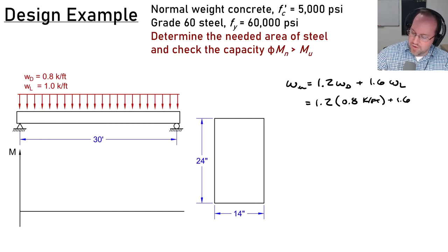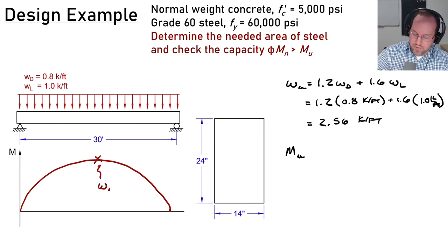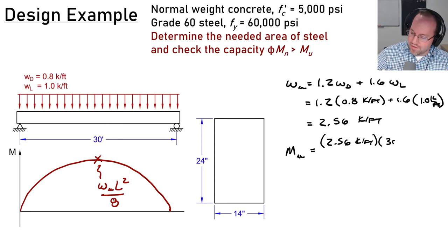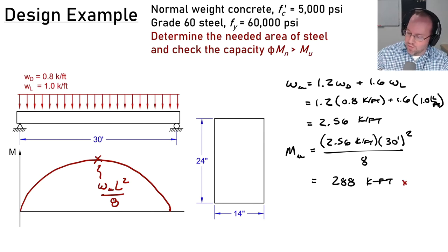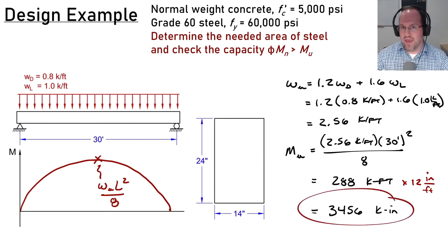Plugging in: 1.2 × 0.8 kips/ft + 1.6 × 1 kip/ft = 2.56 kips/ft. The moment demand Mu for a simply supported beam peaks at midspan: Mu = wu·L²/8 = 2.56 × 30² / 8 = 288 kip-ft. Converting to kip-inches by multiplying by 12, we get a moment demand of 3,456 kip-inches. That is the demand this beam must carry.